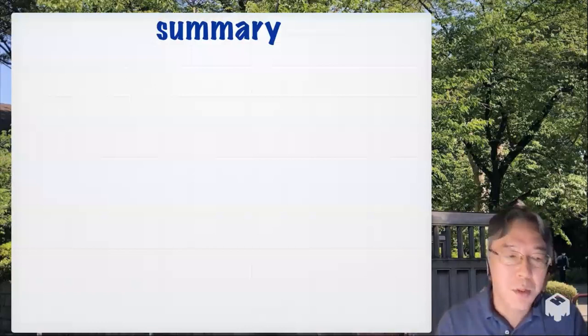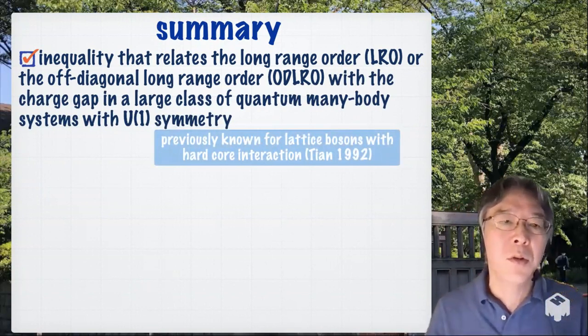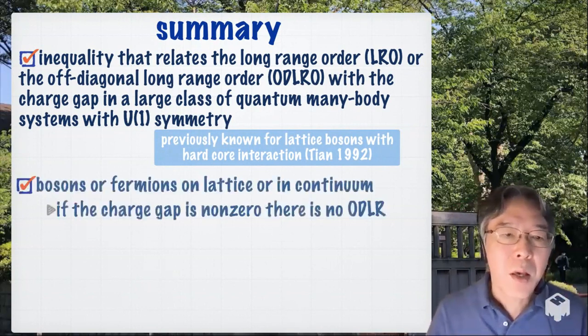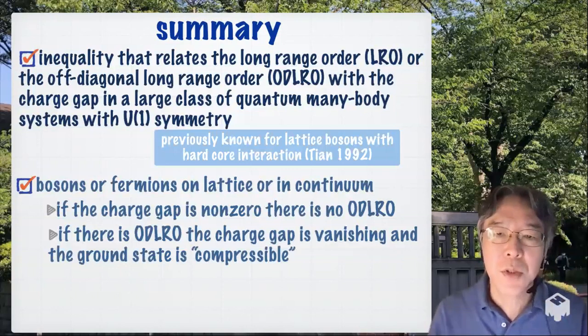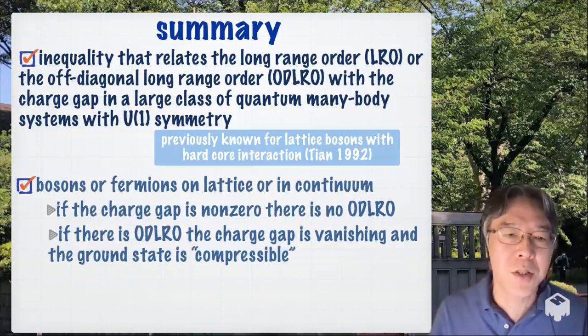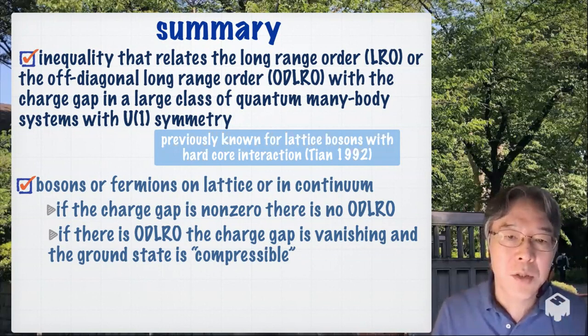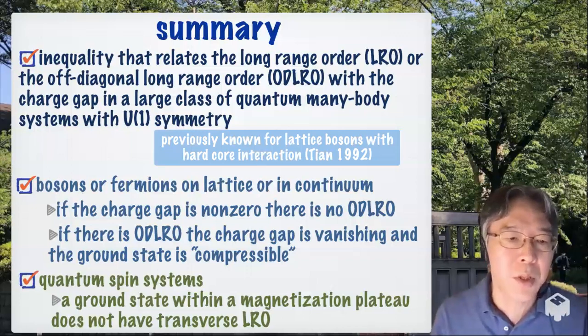Now I go to summary. So we have proved an inequality that relates the long-range order or the off-diagonal long-range order with the charge gap in a large class of quantum many-body systems with U(1) symmetry. And okay. If we apply this inequality to bosons or fermions on lattice or in continuum, first of all, we can say that if the charge gap is non-zero, there is no off-diagonal long-range order. Also, this is almost a contraposition, but we can say that if there is off-diagonal long-range order, the charge gap is vanishing and hence the ground state is compressible. And when applied to quantum spin system, we can say that a ground state within a magnetization plateau does not have transverse long-range order.